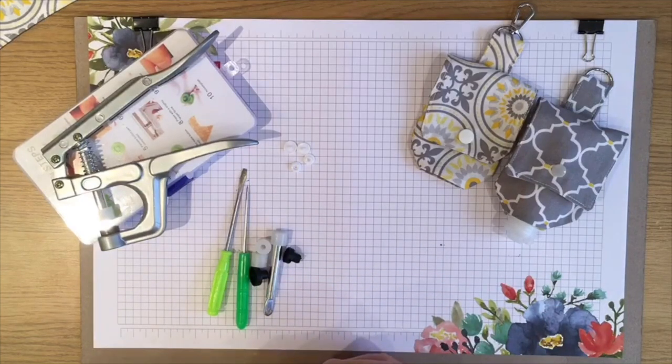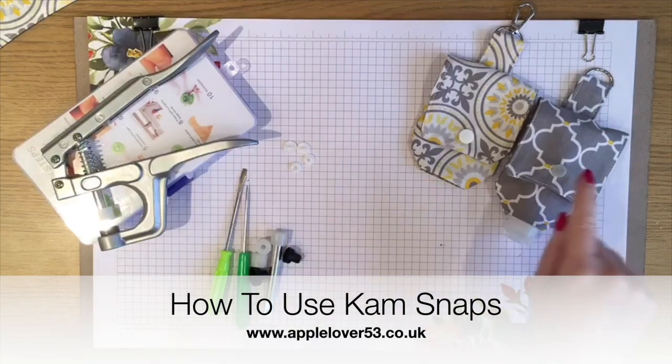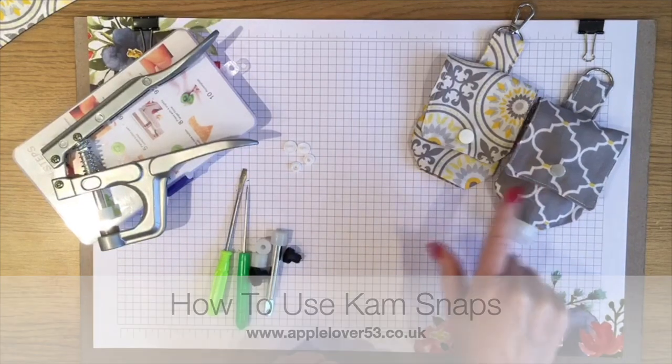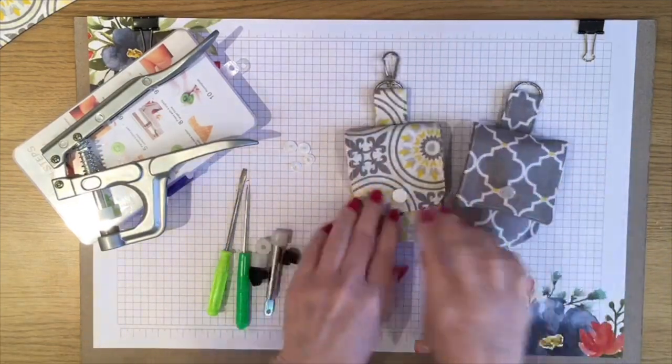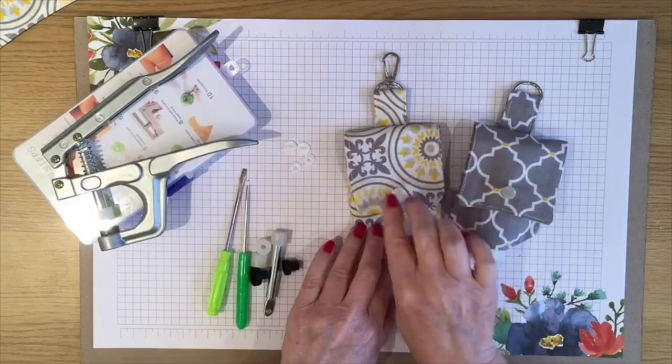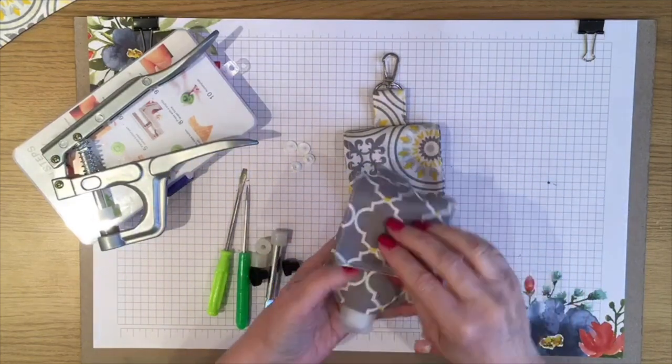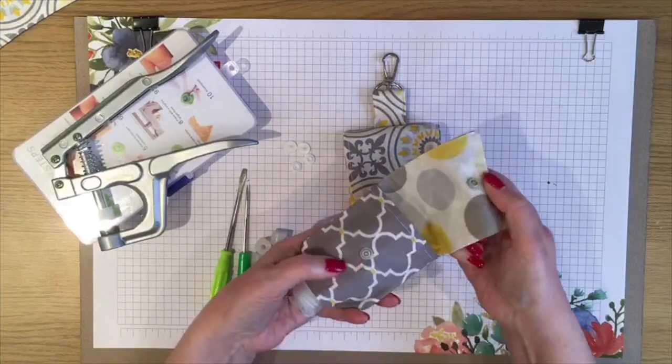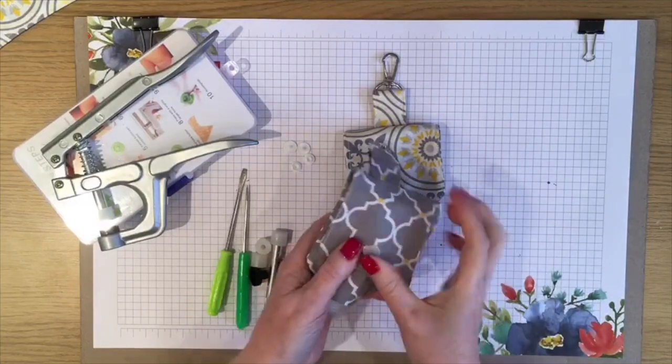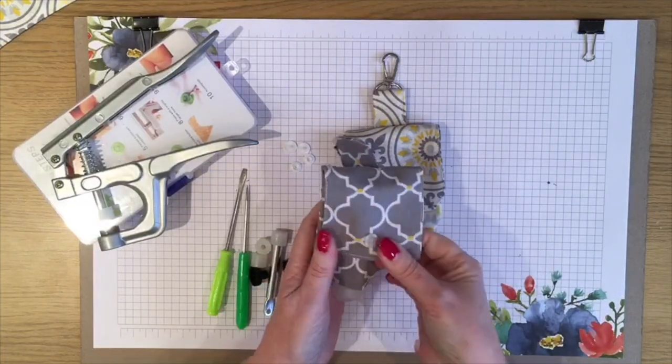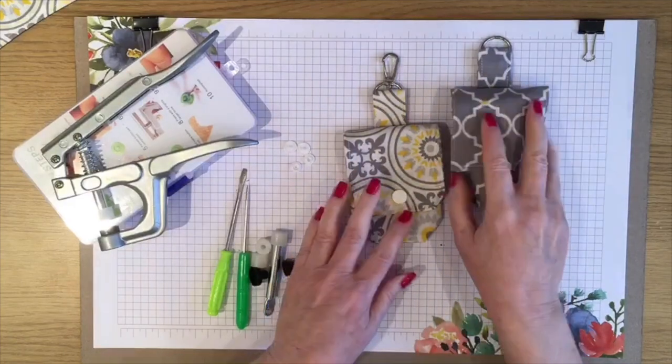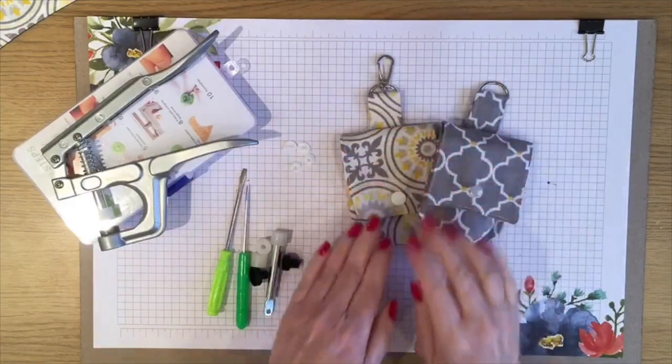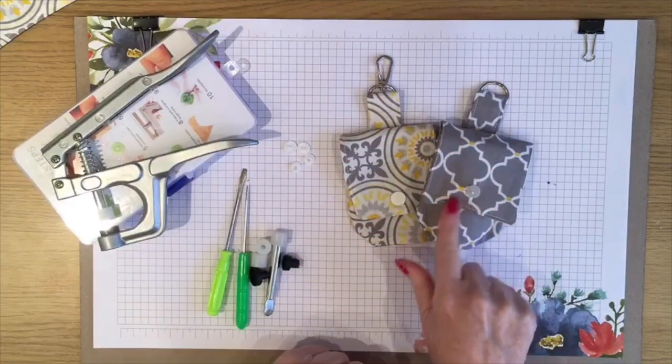Hi everyone, in today's quick tip video I'm showing you how to apply these cam snaps to your projects. I've recently made these hand sanitizer holders and they fasten with a little cam snap. You see these kind of snaps on all sorts of things - clothing, baby's clothing, everywhere.